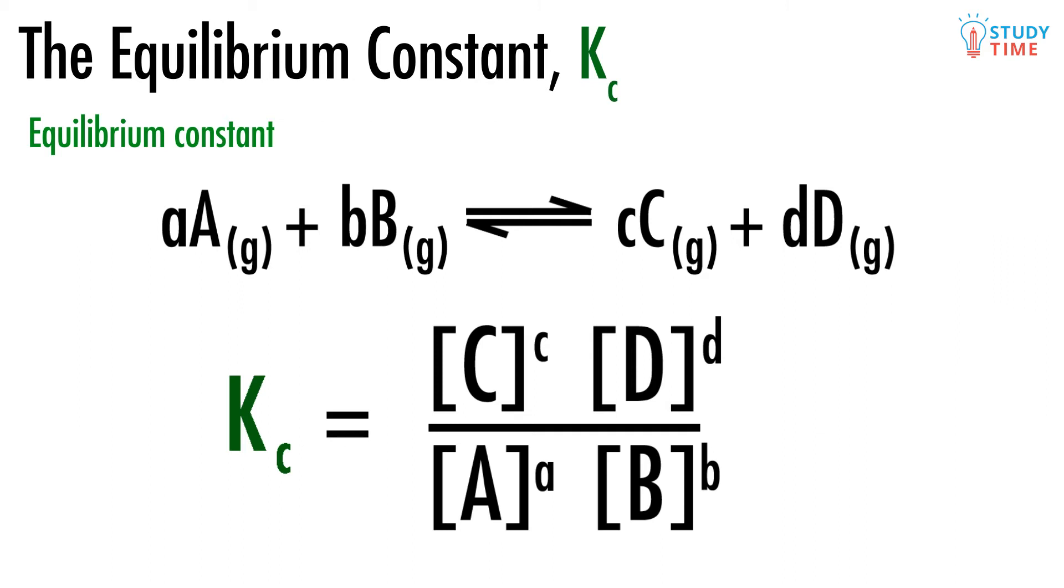Every equilibrium constant looks more or less the same. When we place those square brackets around something, it immediately means that we're discussing the concentration in moles per litre of that particular chemical. What you should be able to see here is that we've got a fraction. On the top is the product of the products on the right side, and on the bottom is the product of the reactants on the left side.